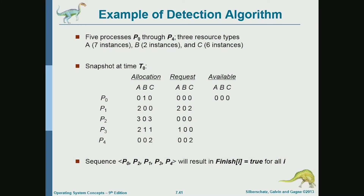In this case, we have these instances of the resources, and based on these instances and what's currently allocated, we have zero instances available of each resource. For resource A, we have two plus three plus two — that's seven — and the total is seven, so zero are available. Resource B: we have two and the total is two, so zero are available.